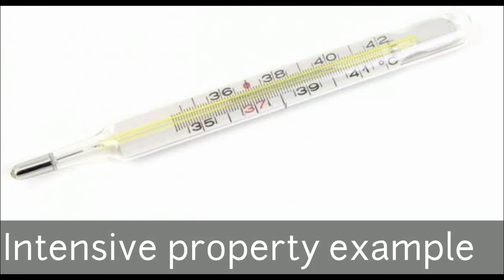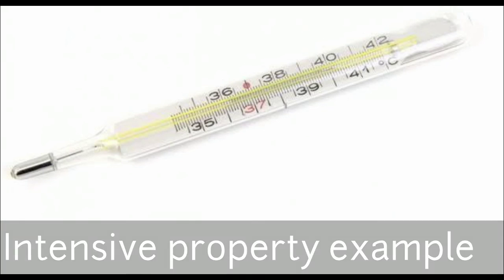For an intensive property example, consider a thermometer — it is used to check temperature. Temperature has no relation to mass; mass does not affect temperature. That is why it is an intensive property — mass is not proportional to the change in the system. The best example of an intensive property is temperature.